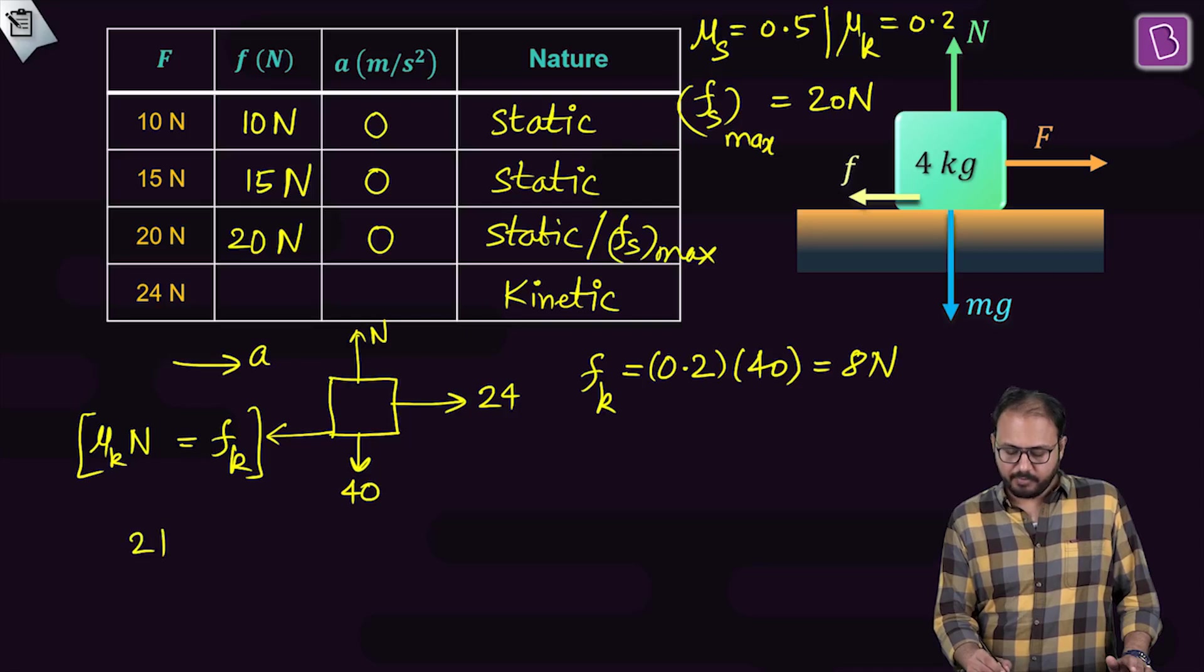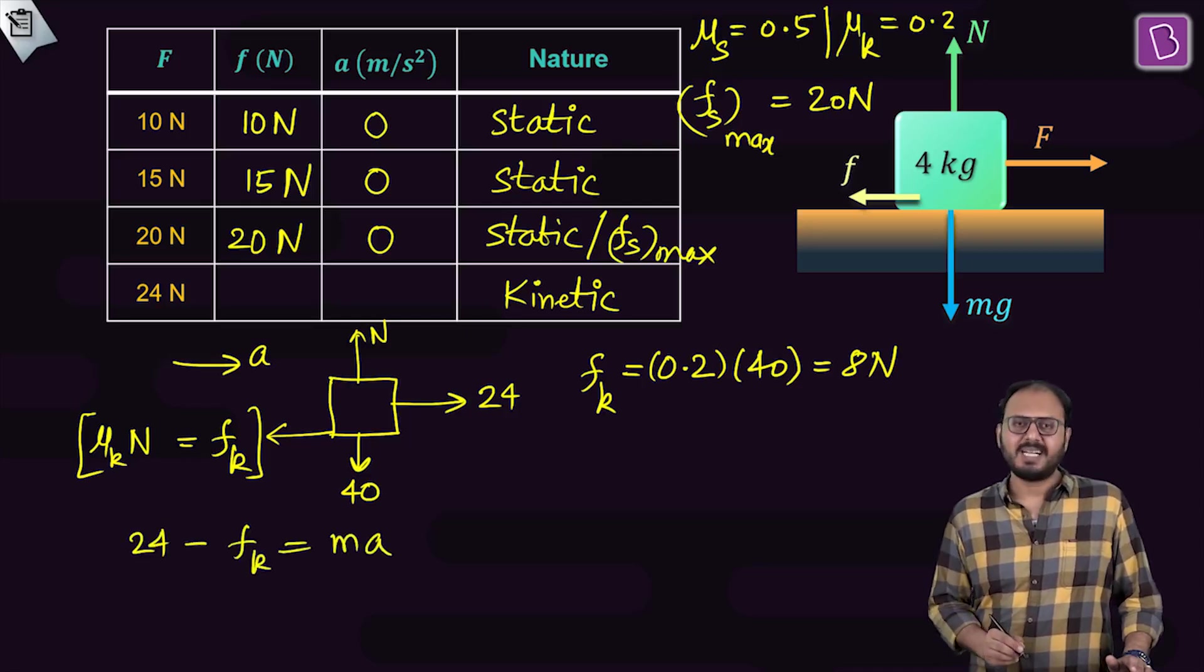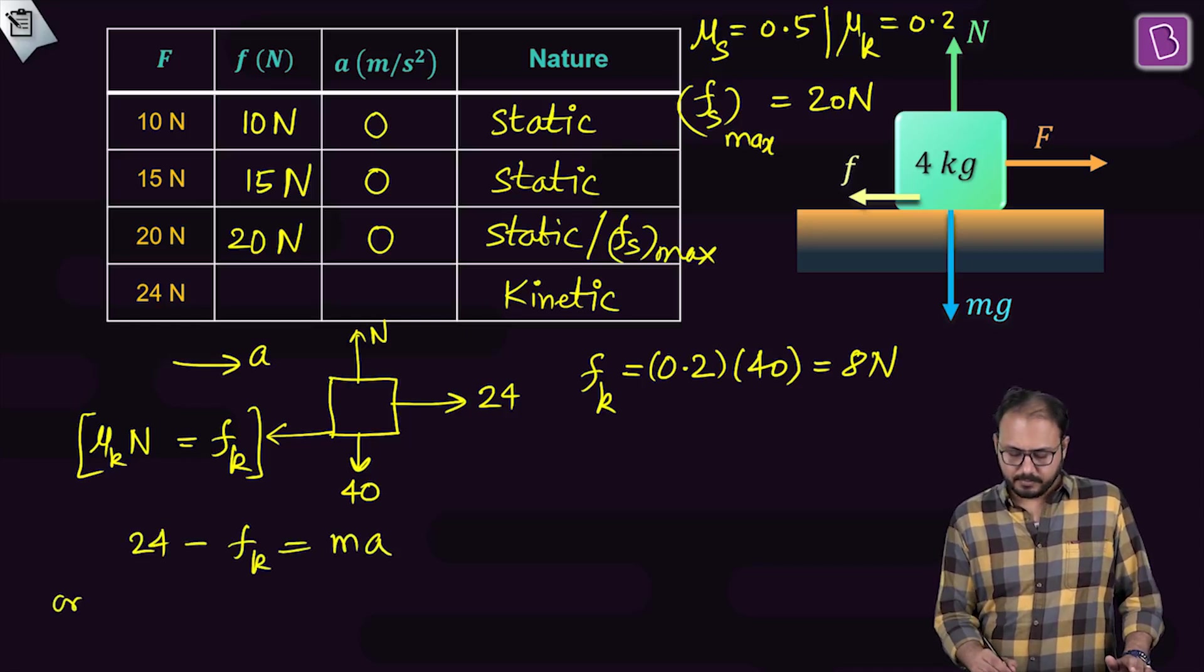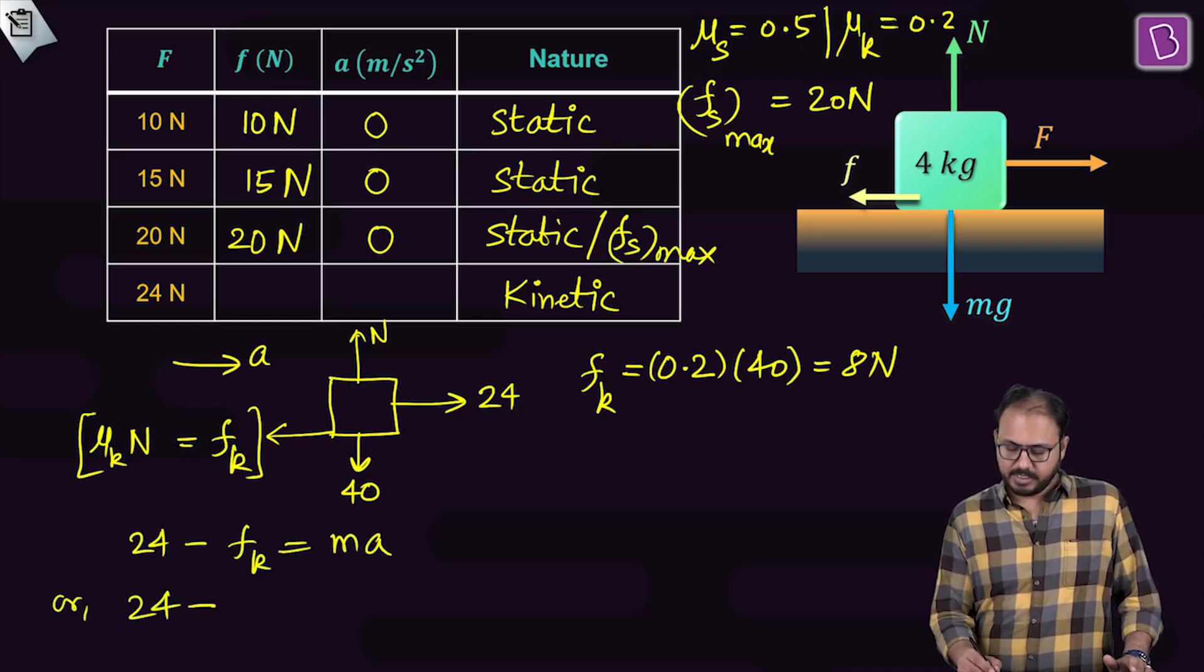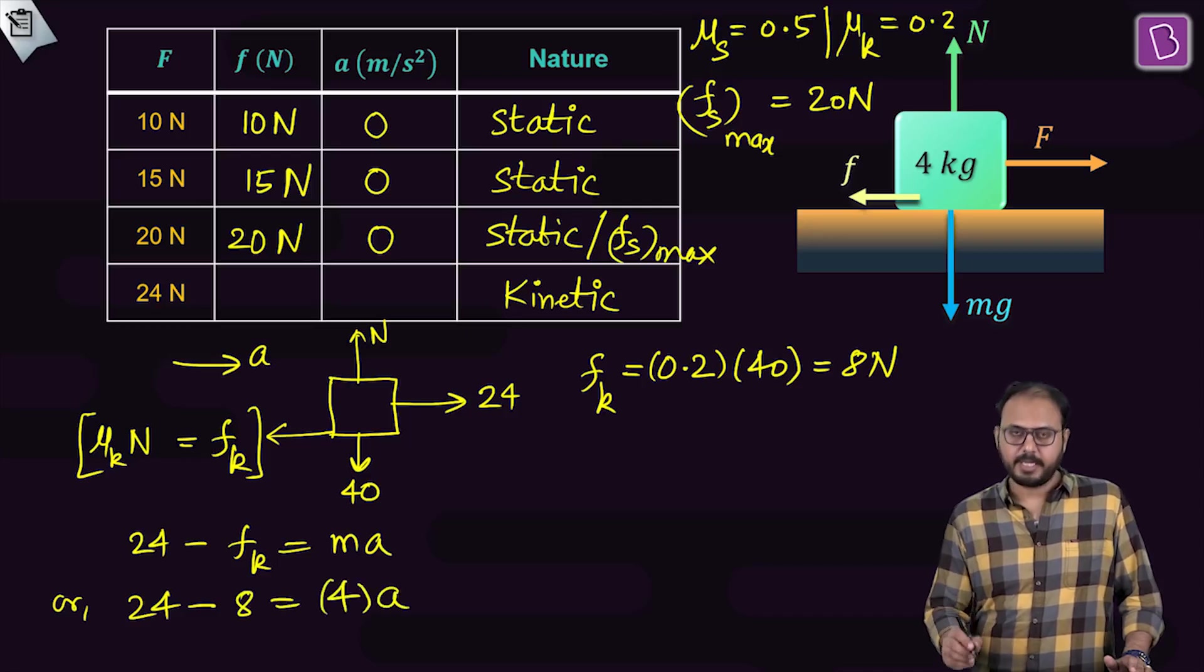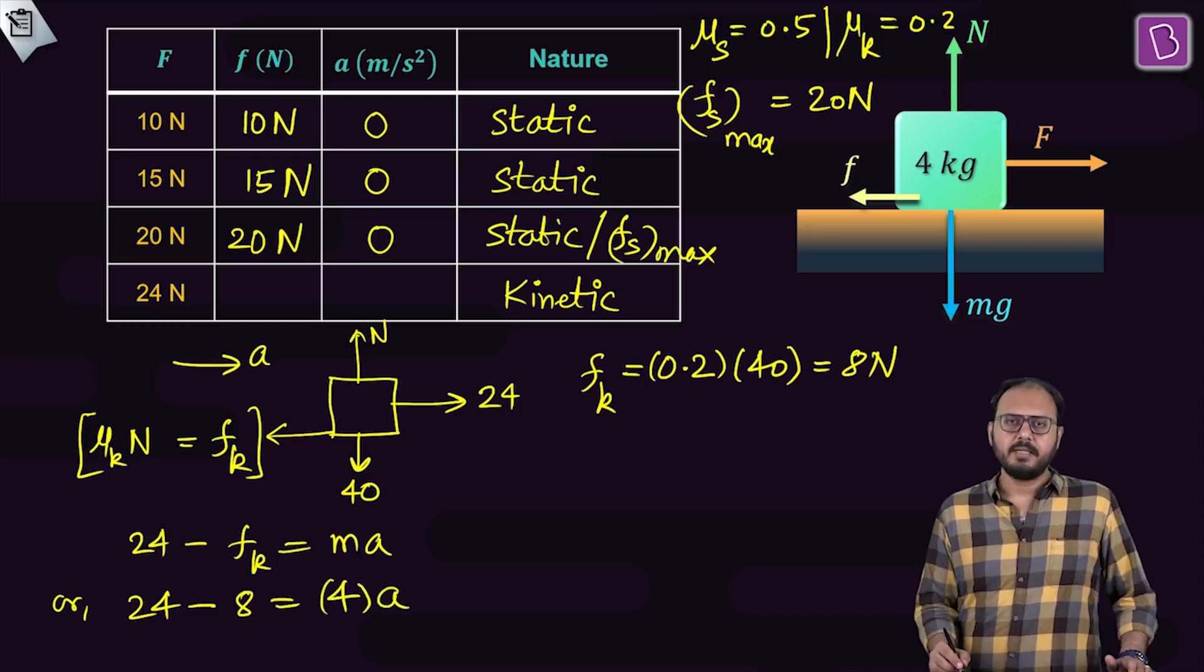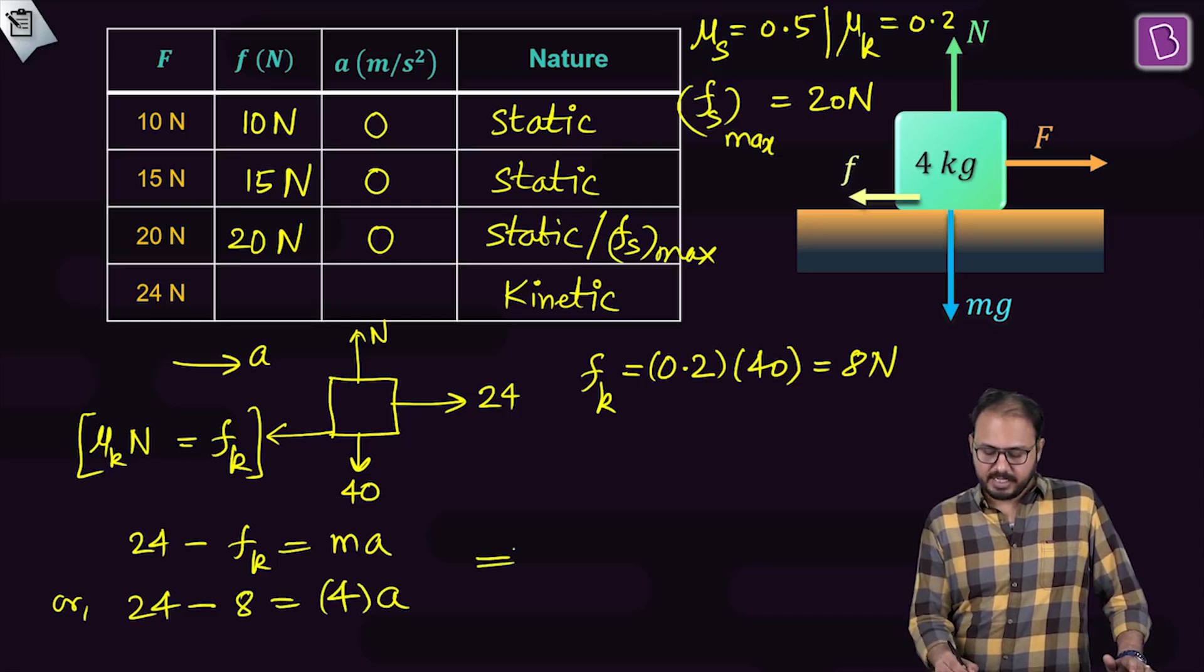What is the right force? 24. What is the backward force? fk. That will be equal to what? Mass into acceleration. What is fk you just found out? 8. What is mass equal to? 4. 4 times a. What is 24 minus 8? 16. And what is 16 upon 4?